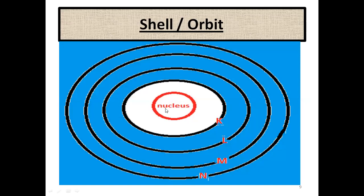The nucleus is the central part of an atom and the outer part is called a shell. Any atom has different shells. The first shell is called the K shell, the second shell is called the L shell, the third shell is the M shell, and the fourth shell is the N shell, and so on. All these shells have different capacities to accommodate electrons.